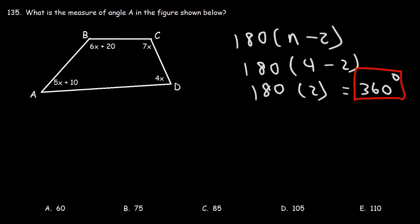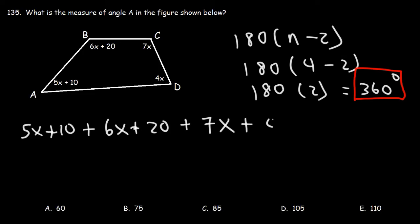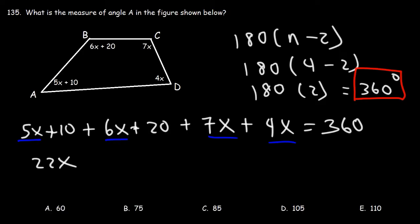So all four angles must add up to 360. Let's write an equation: 5x plus 10, plus 6x plus 20, plus 7x, plus 4x — all of these angles must add up to 360. Combining like terms: 5x plus 6x is 11x, plus 7x is 18x, plus 4x is 22x, and 10 plus 20 is 30.